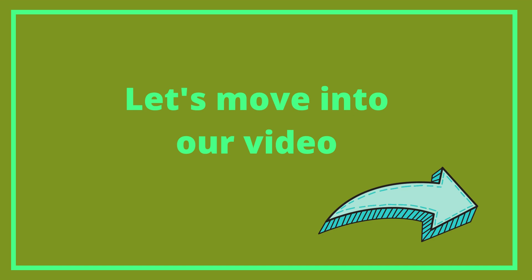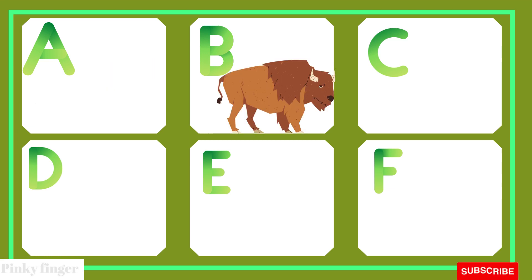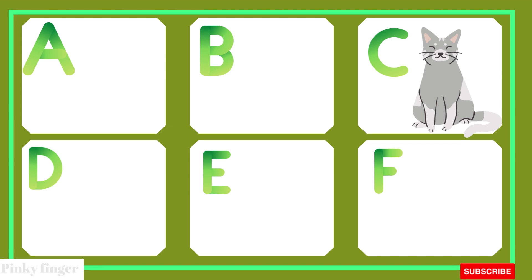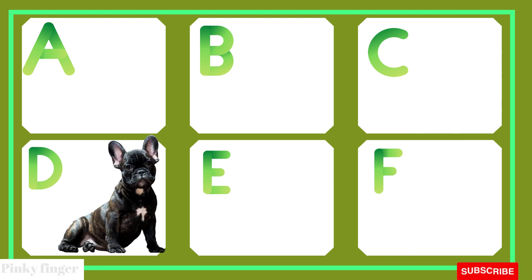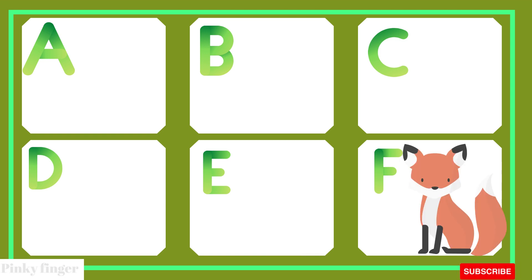Let's move to our video. A is for alligator. Alligator. B is for bison. Bison. C is for cat. Cat. D is for dog. Dog. E is for elephant. Elephant. F is for fox. Fox.